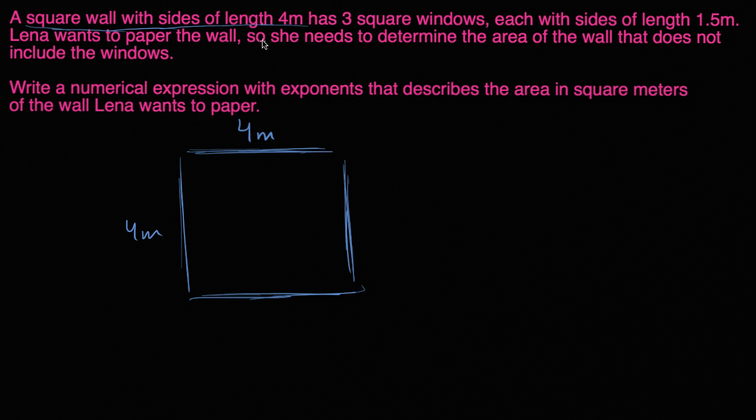And it has three square windows. It has three square windows. Let me do this in a different color. It has three square windows, each with sides of length 1.5 meters. So it might look like this. One square window, another square window, and another square window. And these are each 1.5 by 1.5.